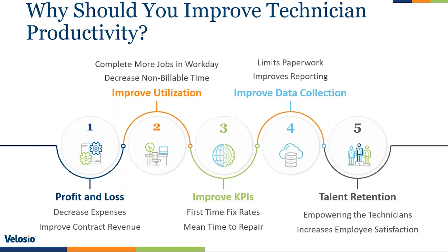Decrease non-billable time. Another point is improving your KPIs — your first-time fix rates. The less times your techs have to do return trips, the more money you're pocketing under contracts. Meantime to repair: decreasing that mean time, making sure that you're more efficient and that your techs understand and have the skill sets to handle the jobs in the first place. Improve data collection, limit paperwork — going from paper to digital. Of course, there are opportunities for paperwork to get lost, and then there's improving reporting.